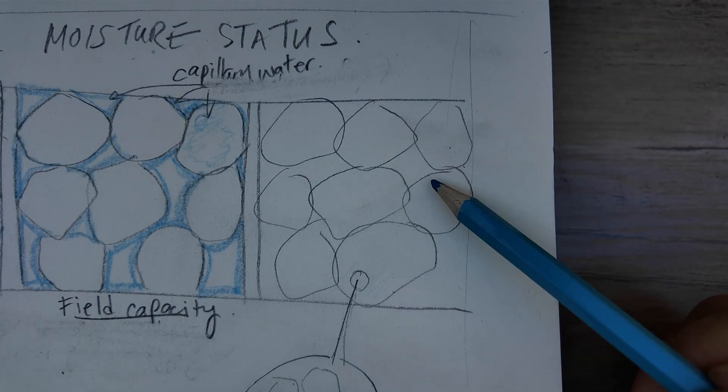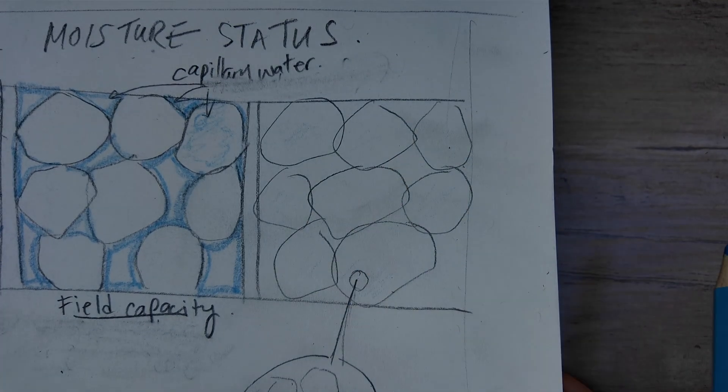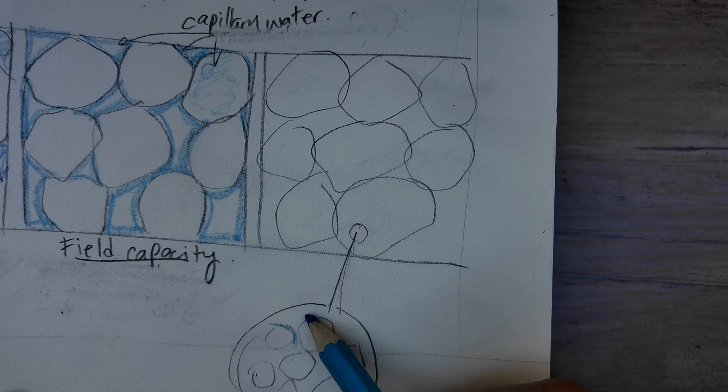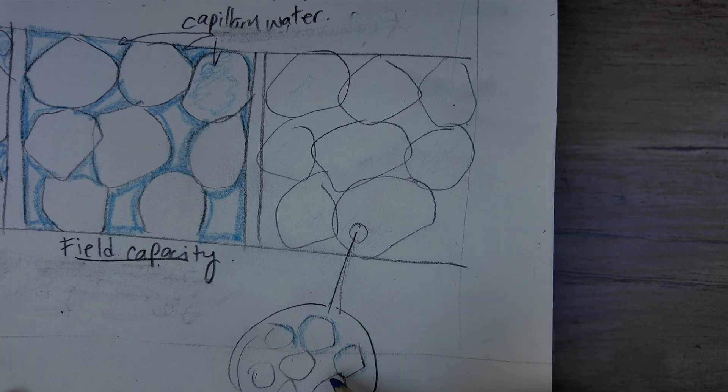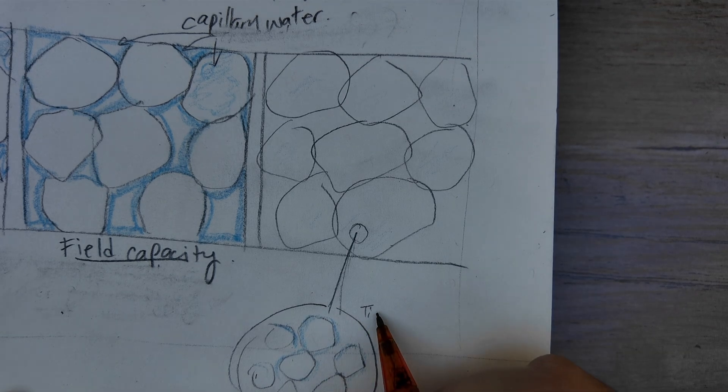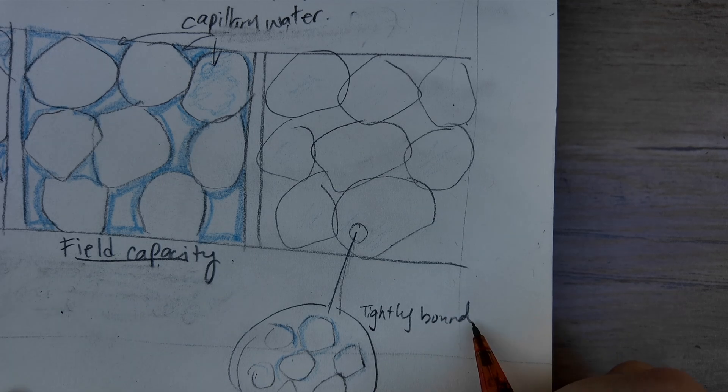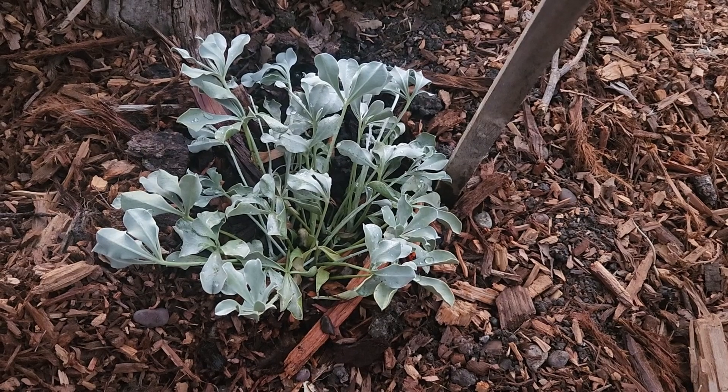From this point on, plants are continuing to use water and the soil gets drier and drier. As the soil gets dried out, the remaining water gets more tightly bound to those soil particles and it takes a lot more energy for the plant to be able to get that water.